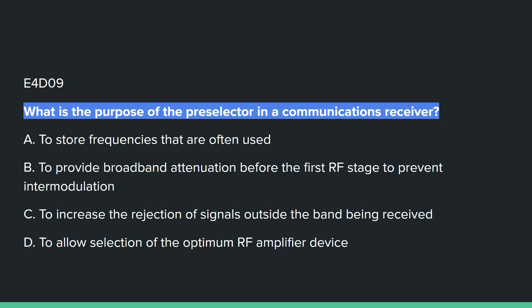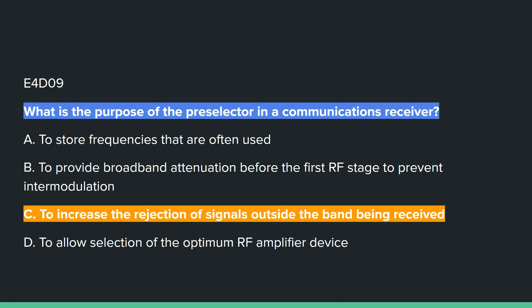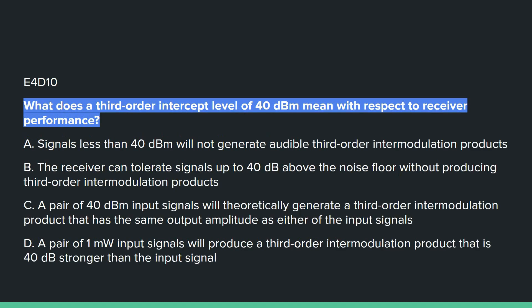E4D09: What is the purpose of the pre-selector in a communications receiver? Answer C: to increase the rejection of signals outside the band being received.